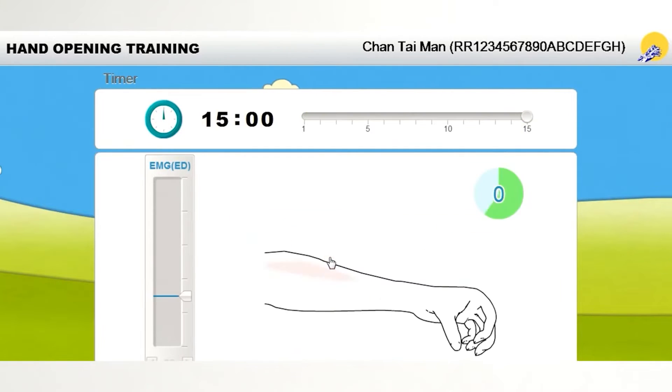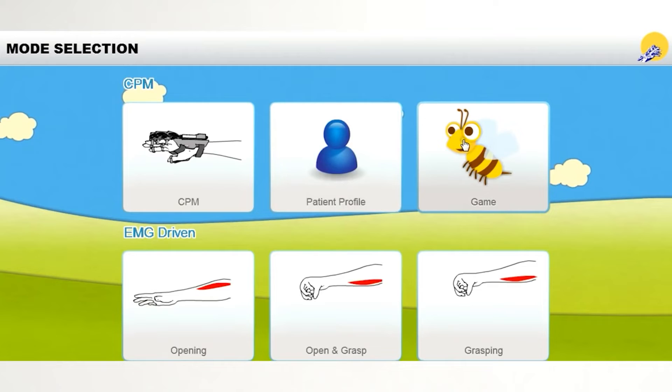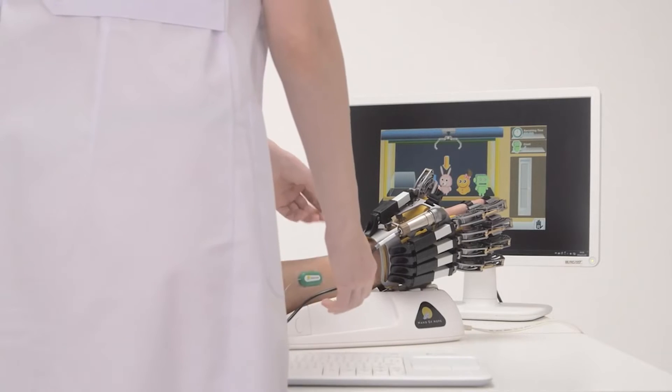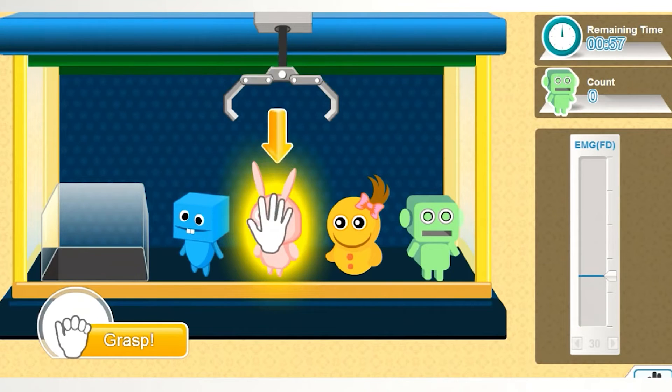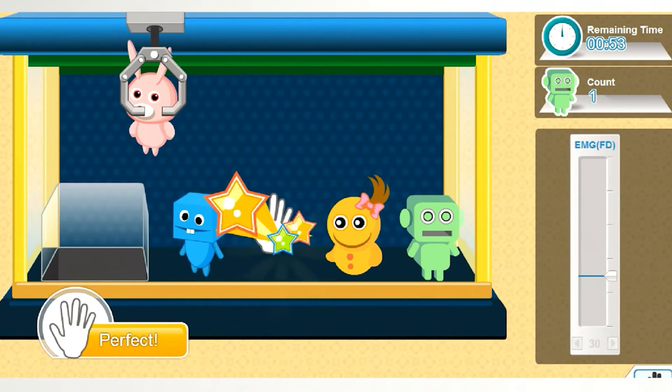Hand of Hope has passive and active training modes for hand opening and grasping. Five different games with four difficulty levels help the patient make the rehabilitation process more interesting and fun with audio and visual stimulation.